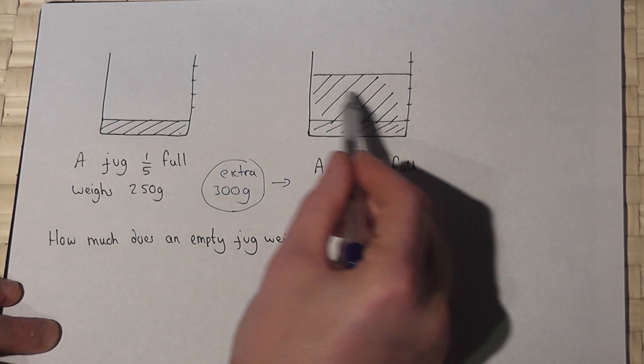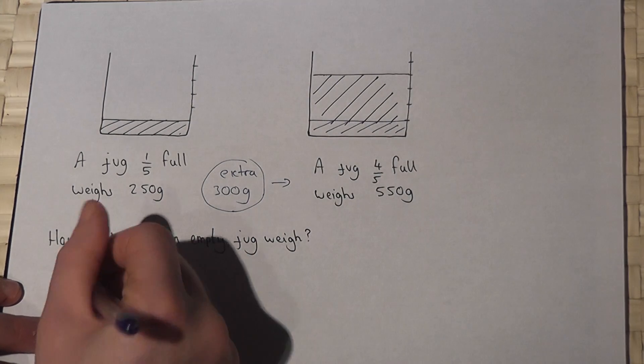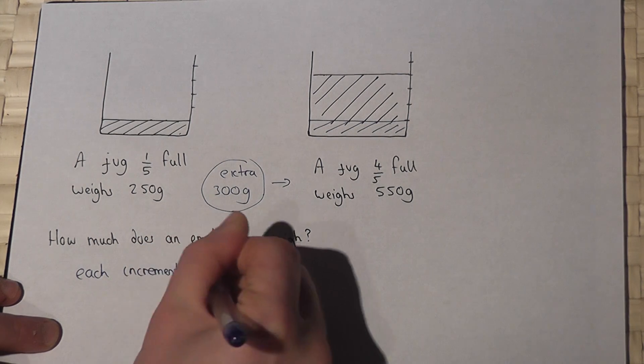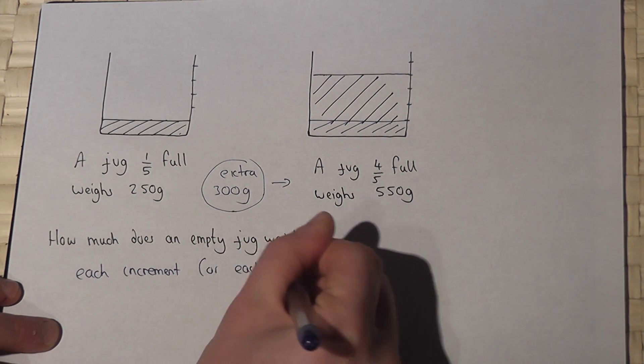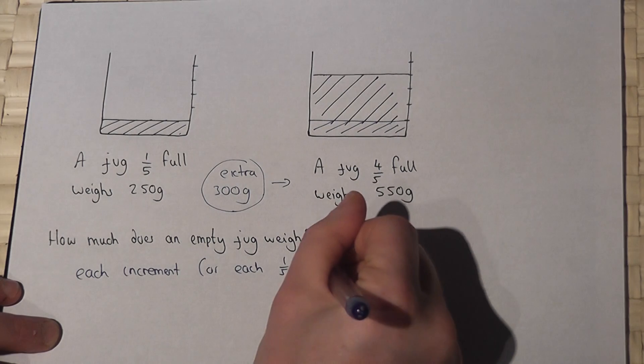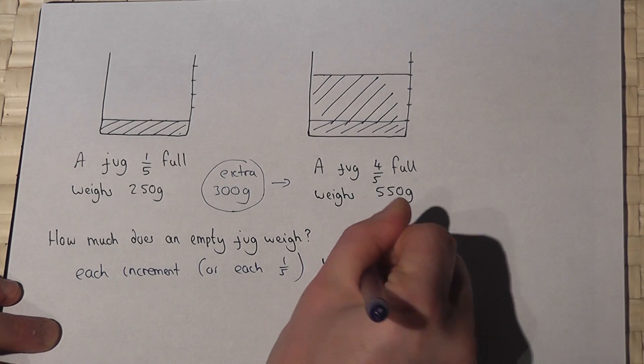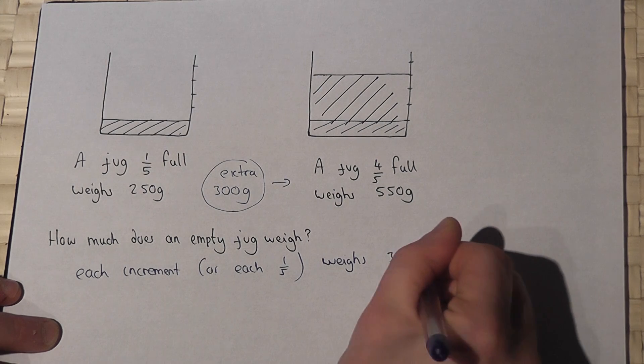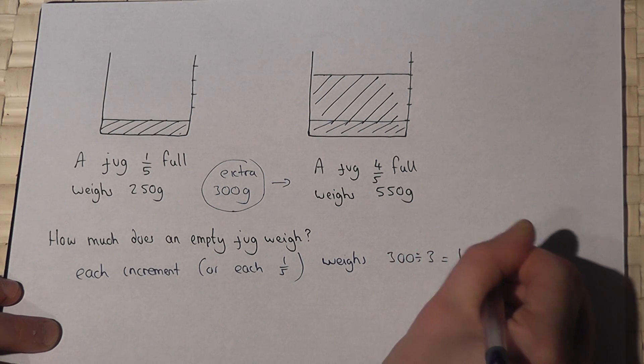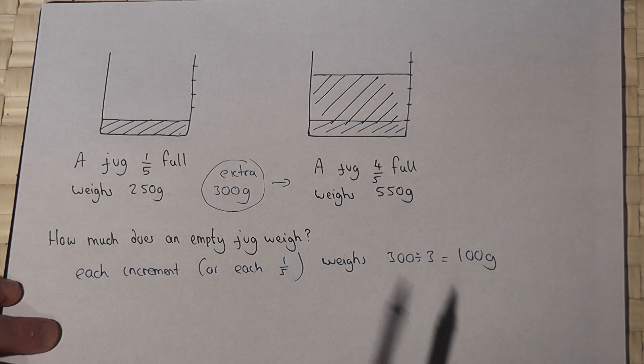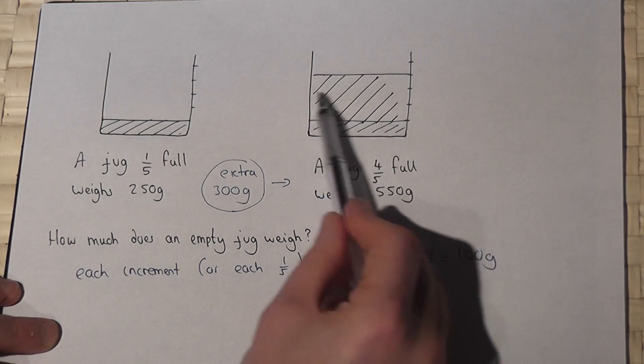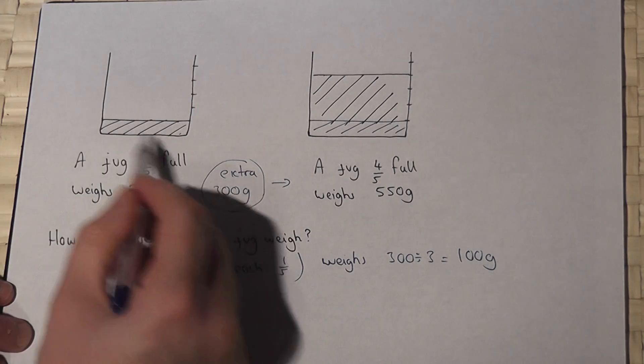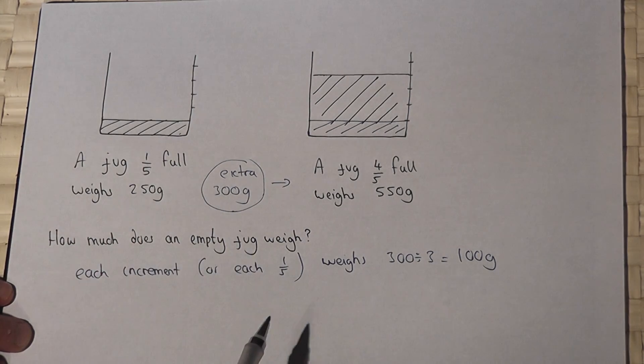So therefore each increment or each fifth must weigh 300 divided by 3, which is 100 grams. So every single increment must weigh 100 grams. So if this jug weighs 250 grams, if I remove the water...